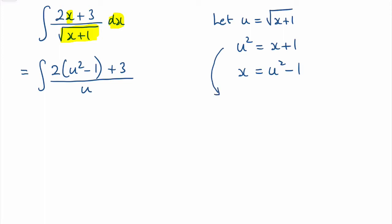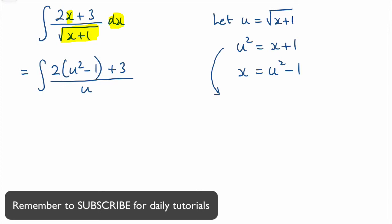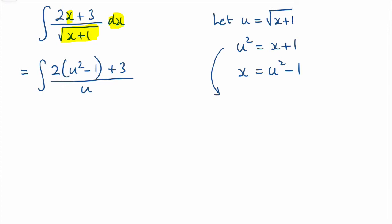Now I don't know yet what dx is, but I can get that from the u squared equals x plus 1 term by differentiating it. Using implicit differentiation, I get 2u du/dx is equal to 1, which rearranges to dx equals 2u du. So instead of dx we've now got 2u du.